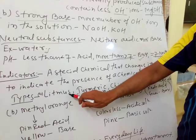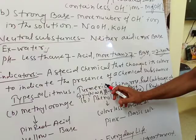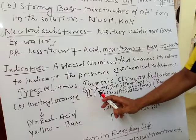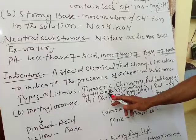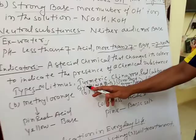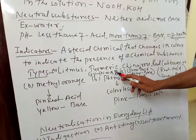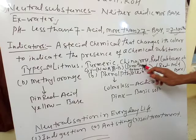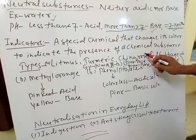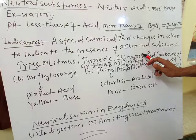The second natural indicator is turmeric. This turmeric powder or solution turns yellow in neutral and acidic substances. When you put turmeric in a neutral substance like water or in acid, it turns yellow. And it turns red when put into a base. Likewise, china rose turns pink in acid and green in base.